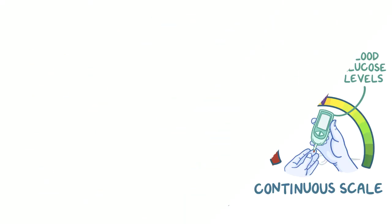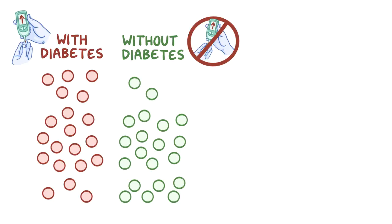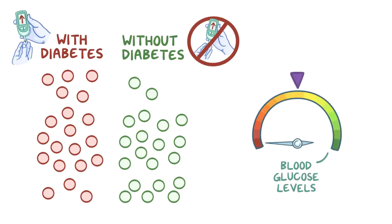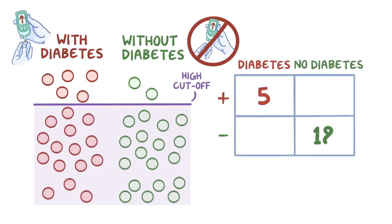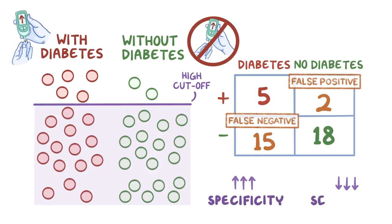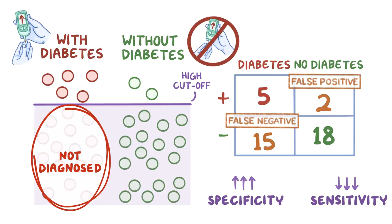For example, let's say that there are 20 individuals with diabetes and 20 individuals without diabetes who get their blood sugar levels tested. Even though the blood sugar levels of people with diabetes tend to be higher, there is no clear cutoff point because there is a lot of overlap in the blood glucose levels of people with and without diabetes. If we pick a high cutoff value, we might end up with only two false positives but 15 false negatives, so the test has high specificity and low sensitivity, and a large number of people with diabetes won't be diagnosed.